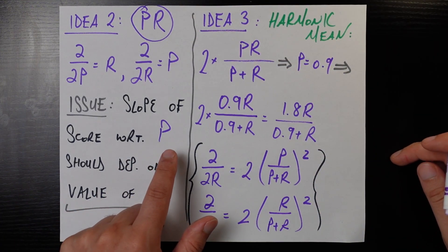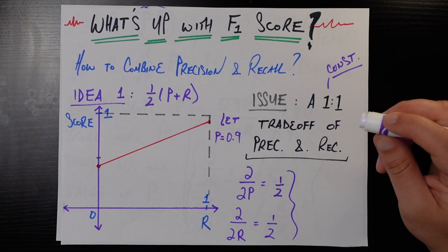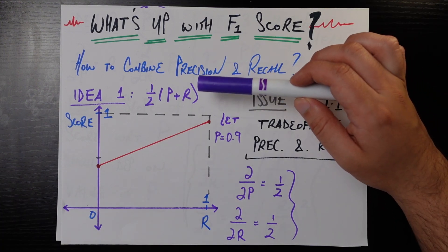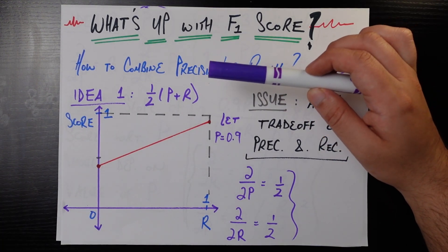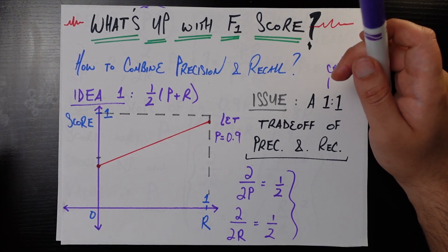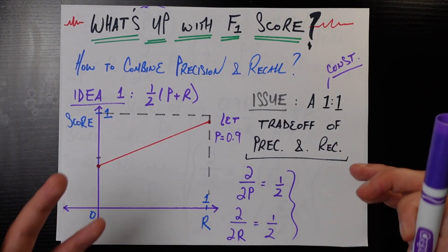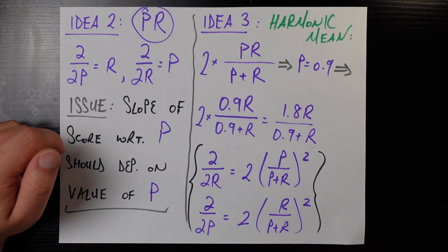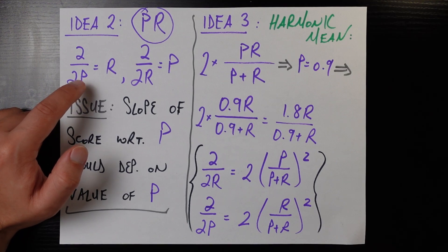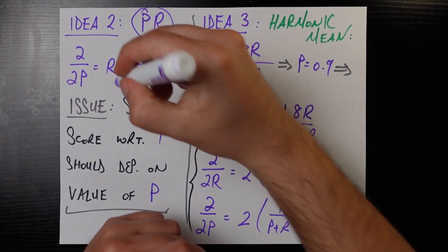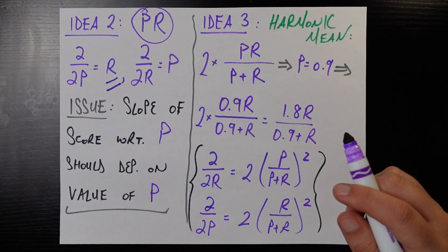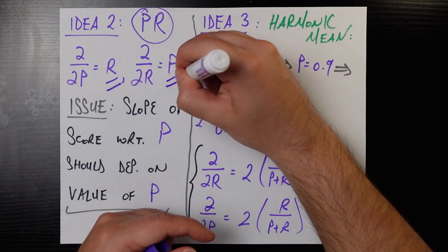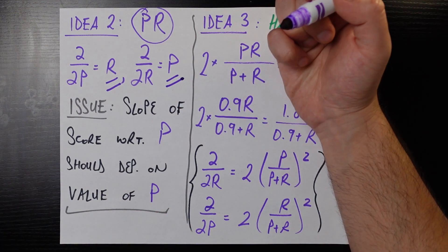The partial derivative of precision times recall with respect to precision equals recall, and the partial derivative with respect to recall equals precision. In some sense these aren't constants, but the issue is that the slope of the score with respect to precision should depend on the value of precision you're at. Here we have the opposite: the derivative with respect to precision depends on recall, not precision itself, and the derivative with respect to recall takes into account precision, not recall. So we still don't have exactly what we want.